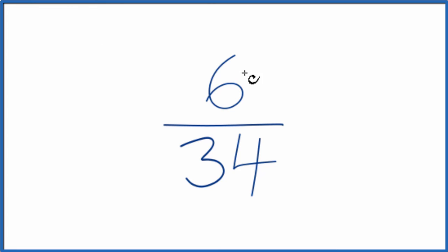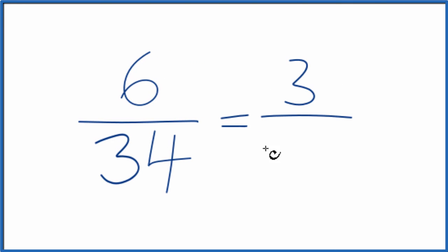I think what I'll do here is instead of writing out all the factors, I'm just going to divide each one of these numbers by 2, since they're even. 6 divided by 2 is 3, 34 divided by 2 is 17.